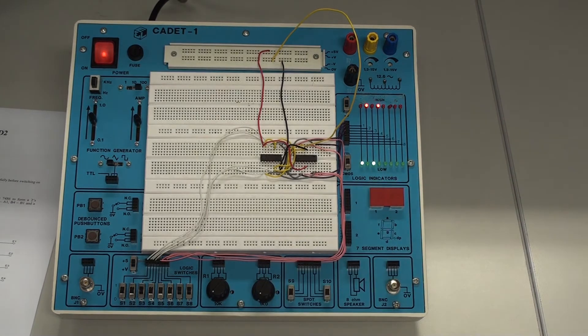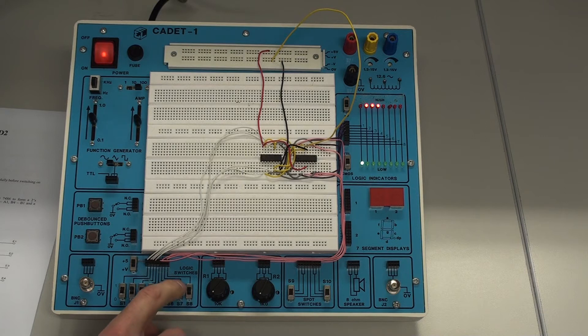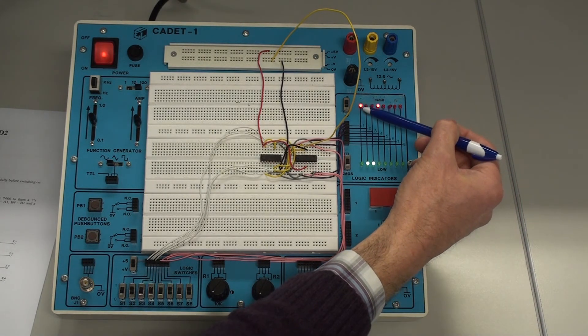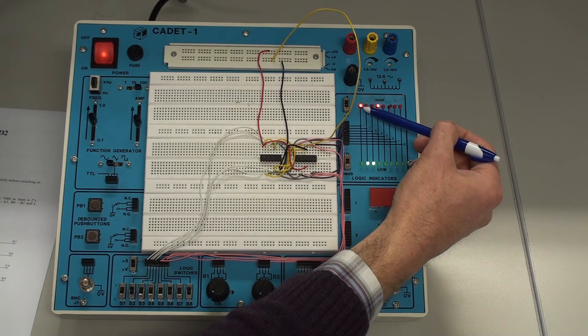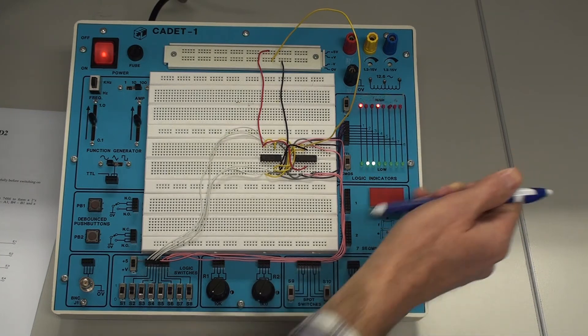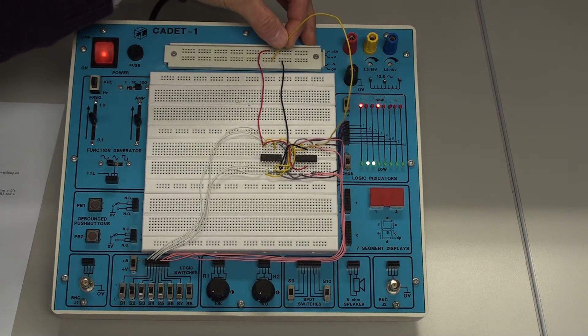And we can try another number. For example, we can try four plus five. And that is nine. And you can see here that the binary nine is displayed on the LEDs. So that is the addition of two numbers. And that is the adder subtractor in the add mode because we have our control line set to low.